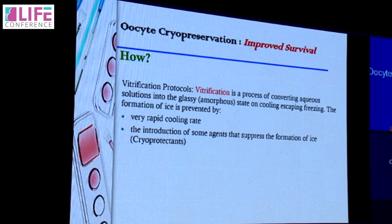Now everything has changed. We have improved survival with oocyte cryopreservation, and this has happened because of a wonderful technique called vitrification. Vitrification is a process of converting aqueous solutions into a glassy or amorphous state on cooling, escaping freezing. Ice formation is prevented by very rapid cooling rates and cryoprotectants that suppress ice formation. Vitrification has been a game changer, not just for oocyte vitrification but for the entire way we practice ART today, including embryo cryopreservation.